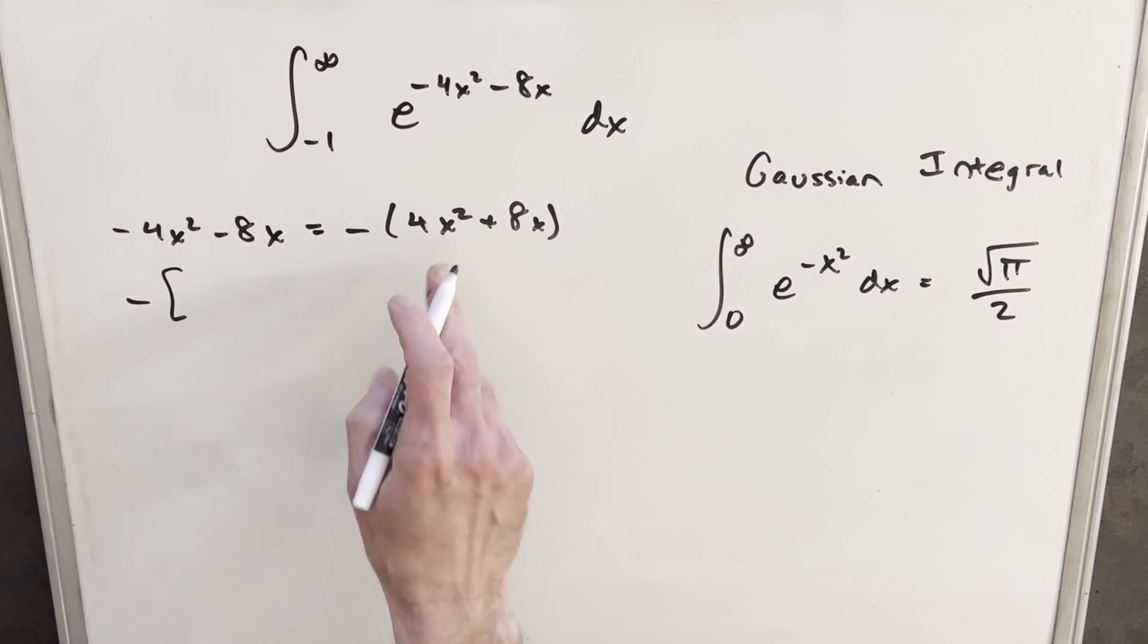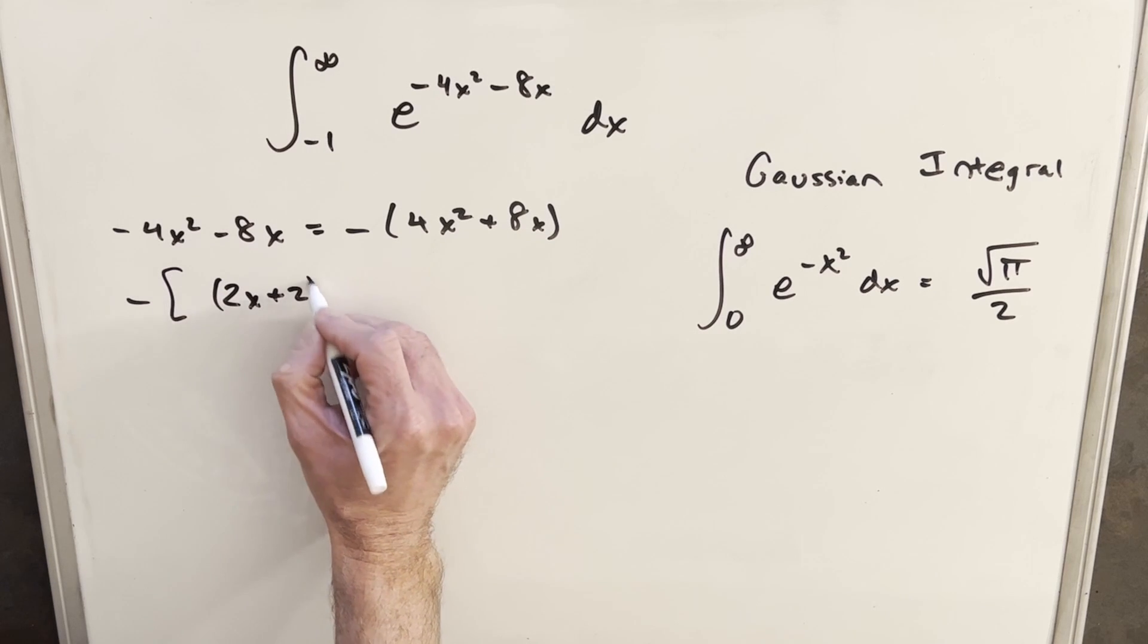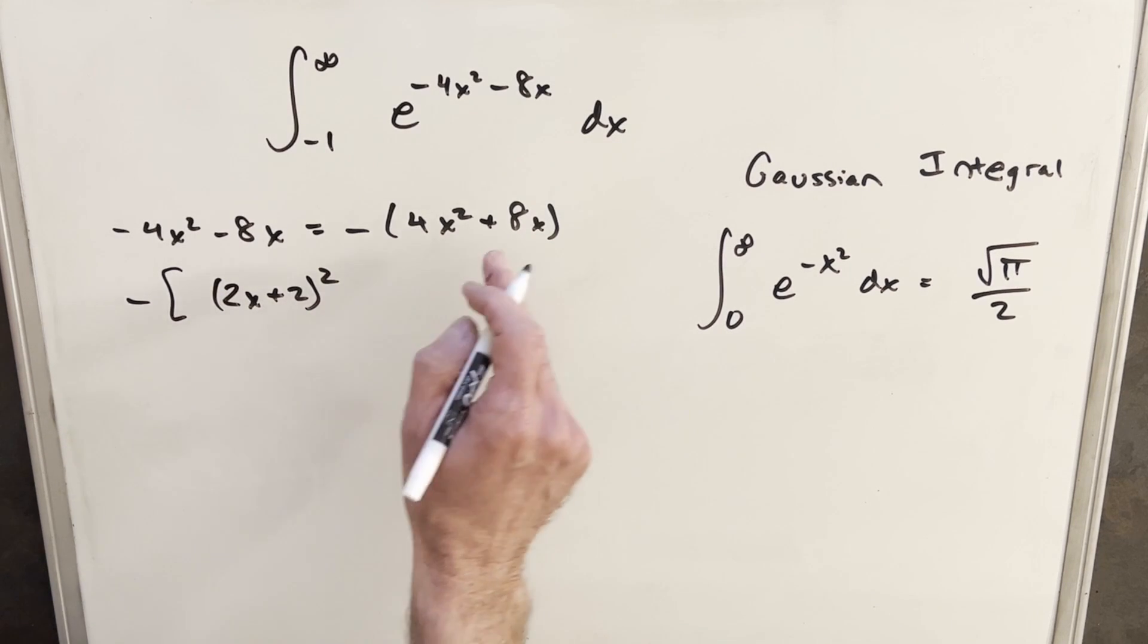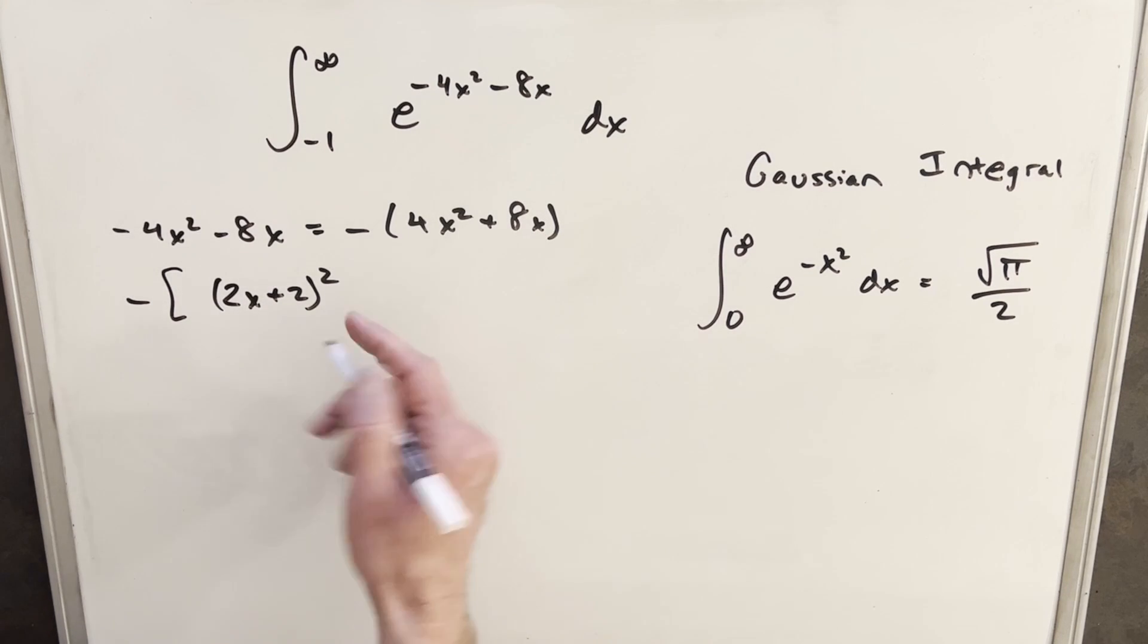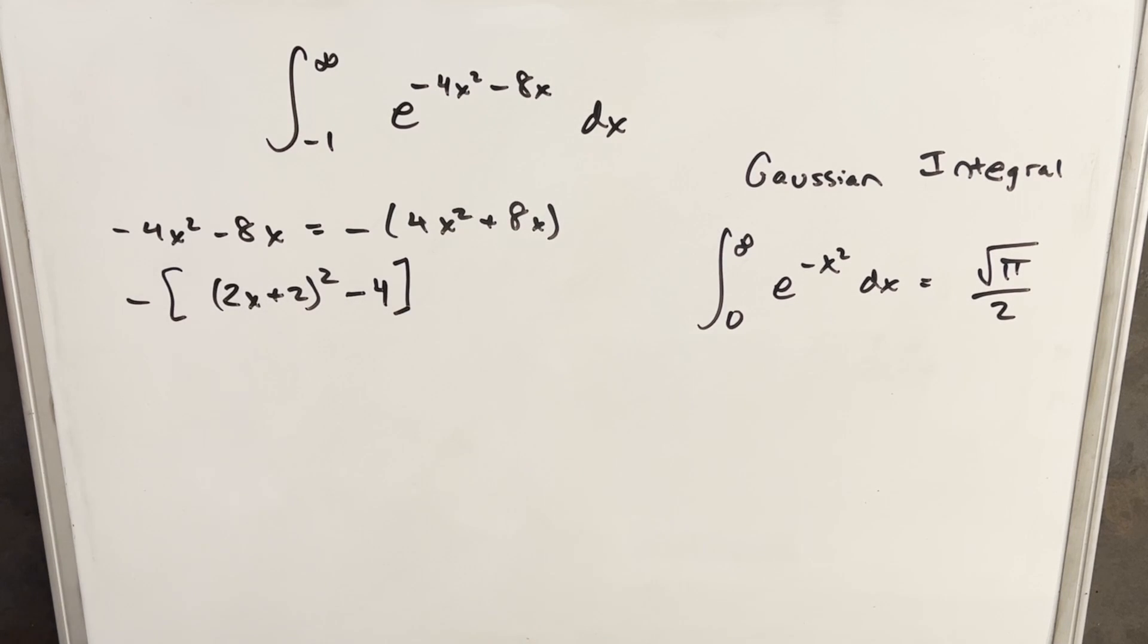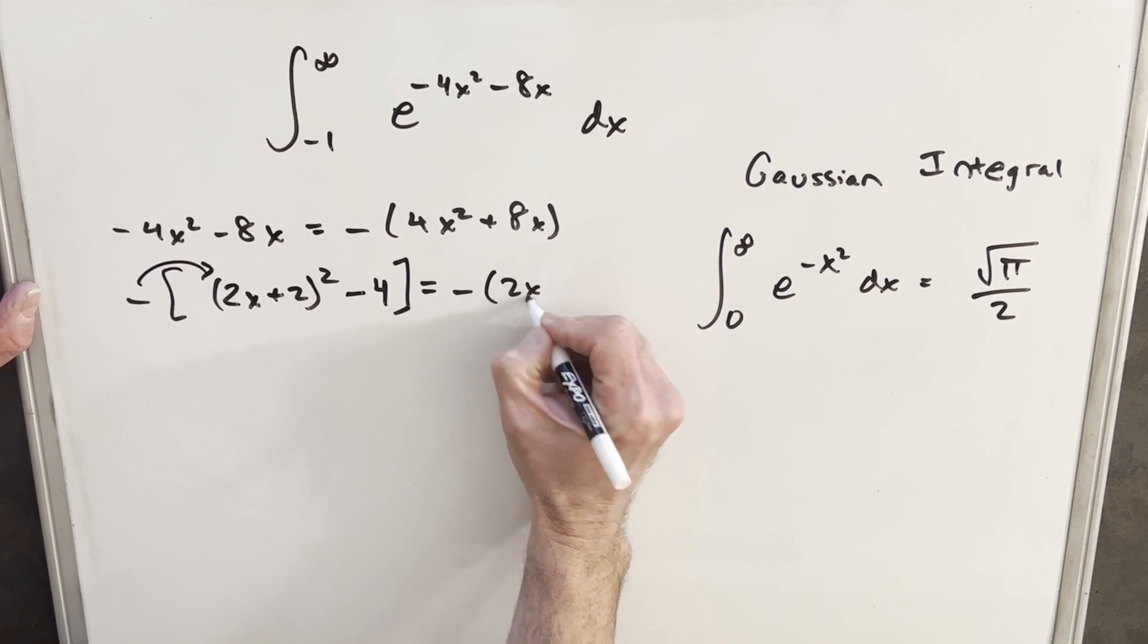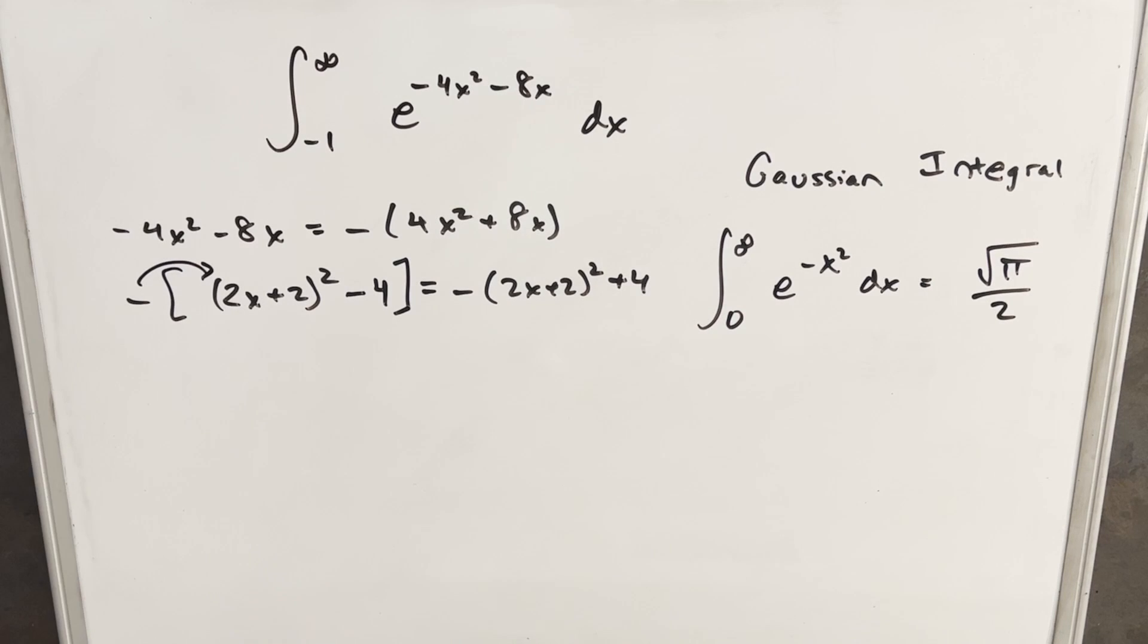What I want to do is complete the square so that when we multiply this, we come back with this part. So we're going to have, if I look at 2x plus 2 squared, that's going to give us 4x squared plus 4x plus 4x is 8x plus a 4. We don't want to change it, so we're just going to subtract off that 4 so we have the same expression. Then I'm going to distribute this minus sign back in so that we have minus 2x plus 2 squared plus 4.